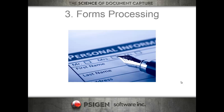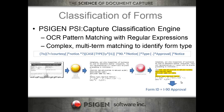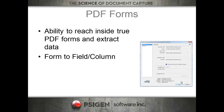SciCapture version 5 was called the forms release, and in that version we added a ton of forms processing capability. The first method is classification — we have a classification engine in the product that is very inexpensive and lets you process forms, apply custom extraction methods based on the form type, and then route them into Filebound. We've also got the ability to pull information out of true PDF forms — we can reach inside the PDF, pull out forms information, extract metadata, and map it into Filebound.